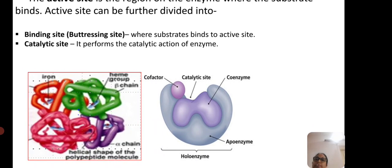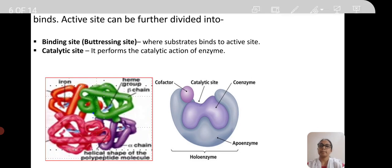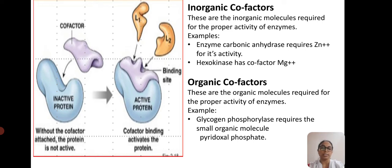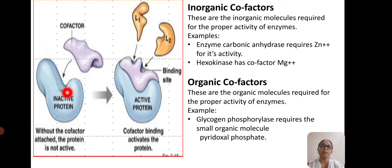Let us see more details of coenzymes and cofactors. As already stated, cofactors are substances which can be organic or inorganic. Inorganic cofactors are usually metallic ions assisting in enzymatic activity. Organic cofactors are of two types: coenzyme, where the organic cofactor is not tightly bound to the apoenzyme; and prosthetic group, where it is tightly bound.